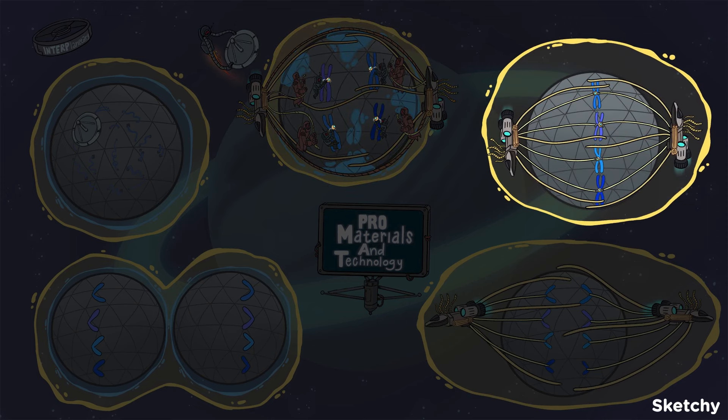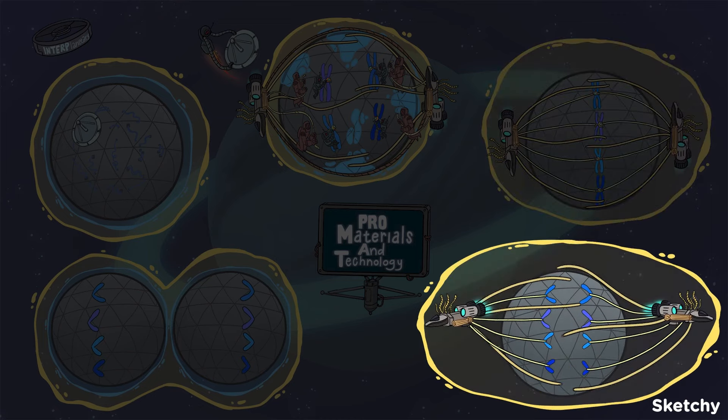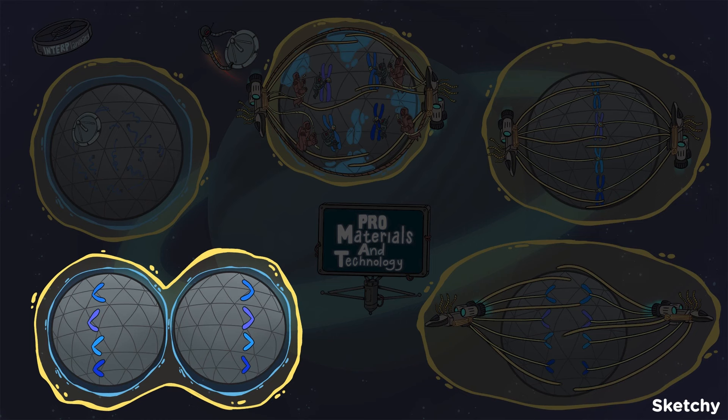In metaphase, the sister chromatids line up along the metaphase plate. In anaphase, the sister chromatids are pulled apart. In telophase, the spindle fibers go away and the nuclear envelope reappears before the parent cell fully splits into two daughter cells by cytokinesis.